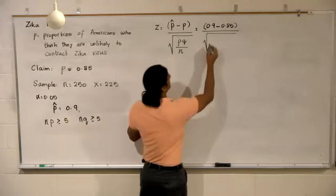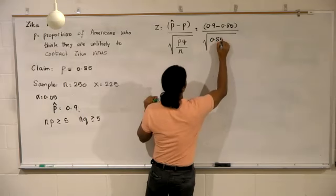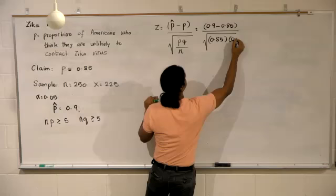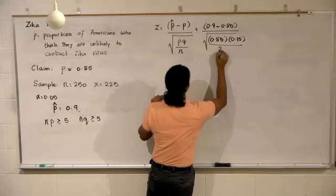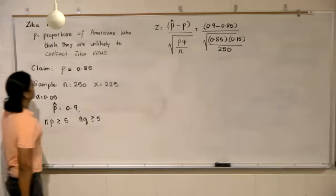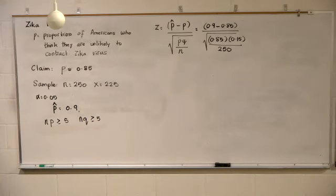0.15. So we have p times q divided by n, which is 250. You put that all in and what do you get?